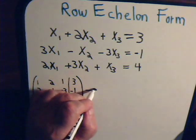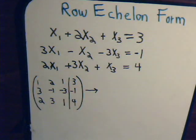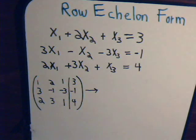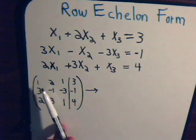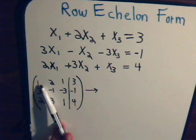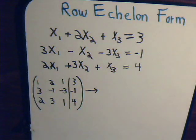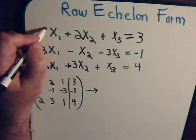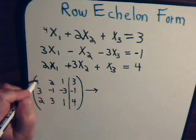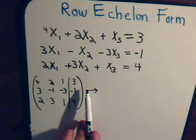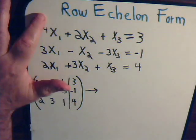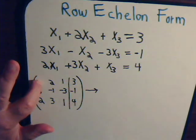The first step is to check that the first number in the first column, first row is 1. When setting up an augmented matrix, you want that leading entry to be 1. So if we had, for example, a 4 there, we'd have to divide all the way across by 4 first to make it 1. We don't have to do that here because it already is 1.